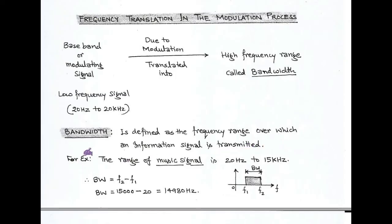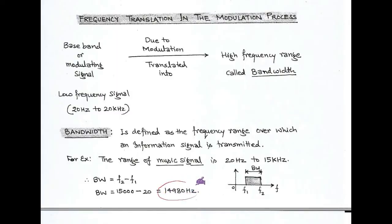For example, consider a music signal with a range of 20 Hz to 15 kilohertz. In this case, the bandwidth is the high frequency minus the low frequency: 15 kHz minus 20 Hz equals 14,980 Hz. This is the bandwidth of the music signal through which it gets transmitted over a channel.